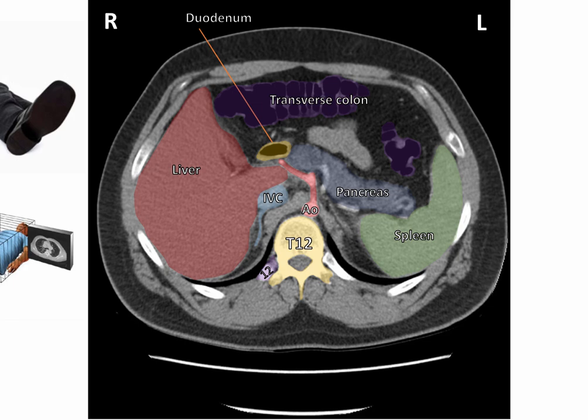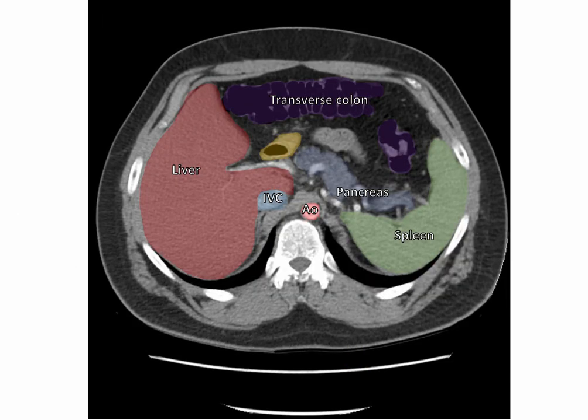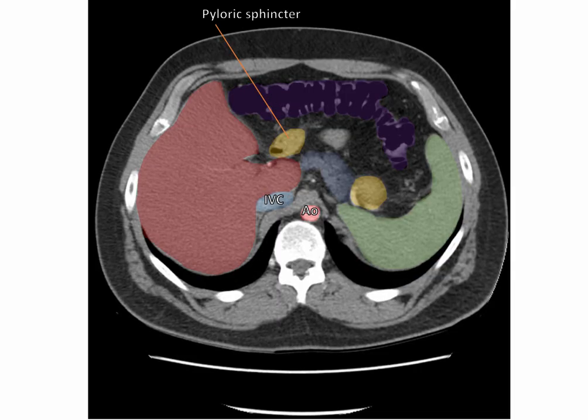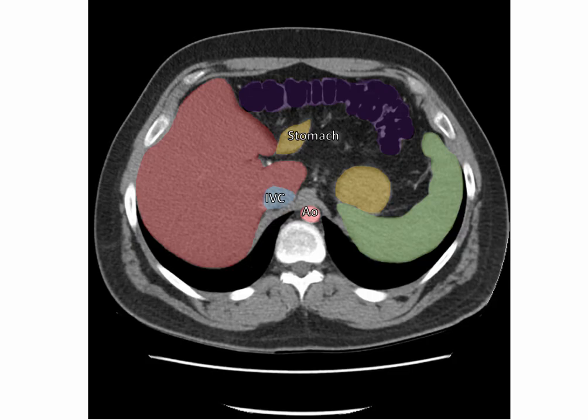The dark areas which we can see here are the costo-diaphragmatic recesses, which are containing pleural fluid. As we move superiorly, we can start to see the pyloric sphincter. This is marking the junction of the duodenum with the stomach.